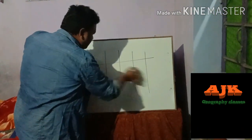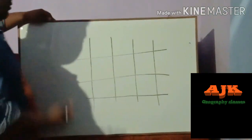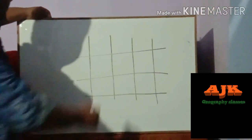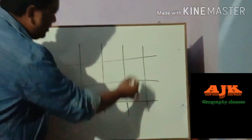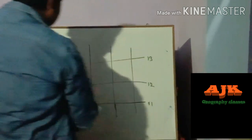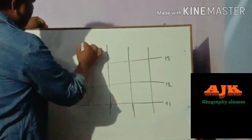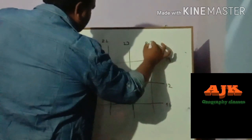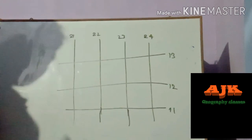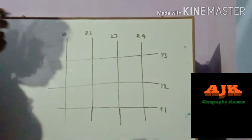Let's come on to the board. I'll draw a simple diagram of the grid lines — you already know this. I'll give coordinates: from this side it's 11, 12, 13; from this side it's 21, 22, 23, 24. But before we begin, we need to learn some basic terminologies which will help you calculate four-figure and six-figure references.